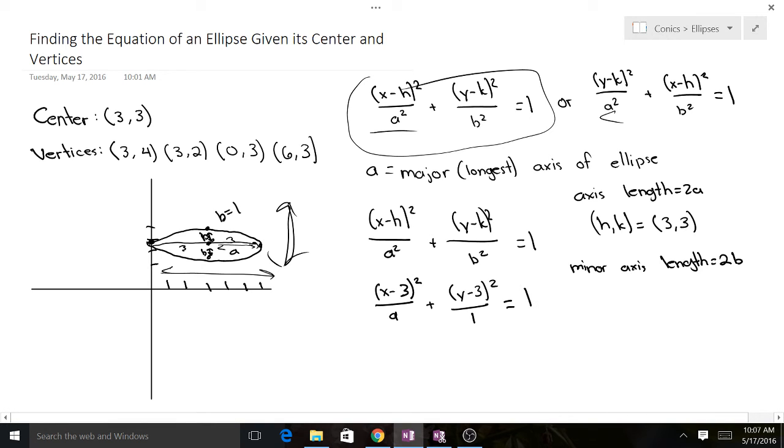And that's going to still be equal to our 1. And so this is our final equation for the ellipse. We've got x minus 3 squared over 9, plus y minus 3 squared over 1, equals 1. And that'll give us the ellipse looking like that.